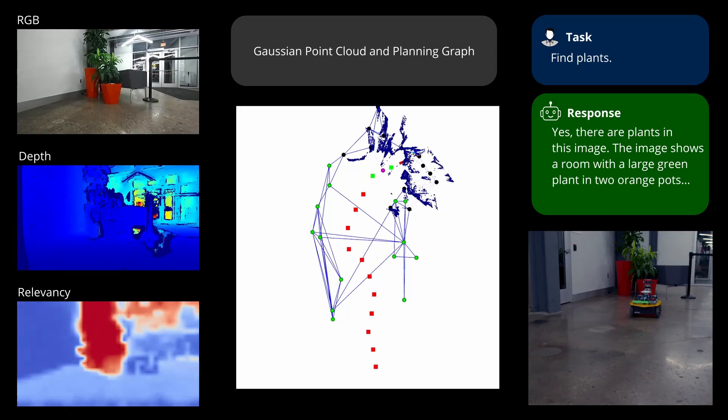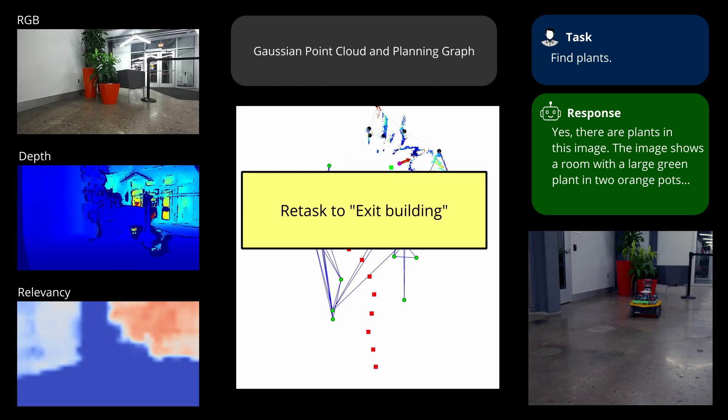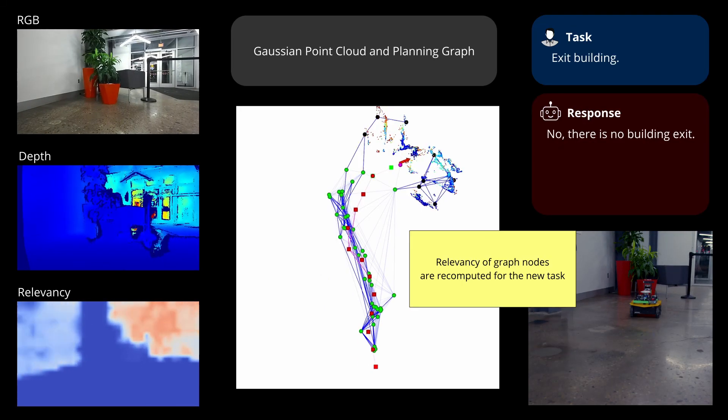Upon completing the first task, the robot is then re-tasked to exit the building. The relevancy of the graph nodes are re-computed for this new task.